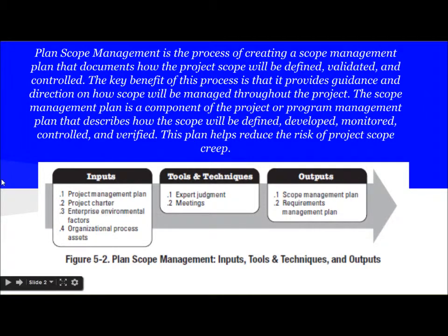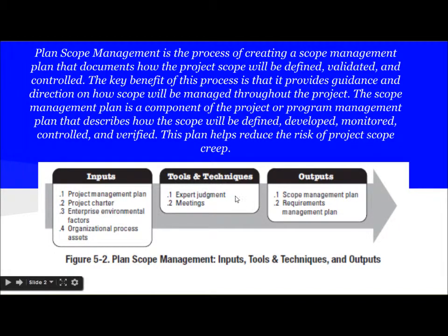Let's see what are the inputs, tools and techniques, and outputs for the process Plan Scope Management. The inputs involved are: project management plan, project charter, enterprise environmental factors, and organizational process assets. The tools and techniques used are expert judgment and meetings. The outputs are scope management plan and requirements management plan.